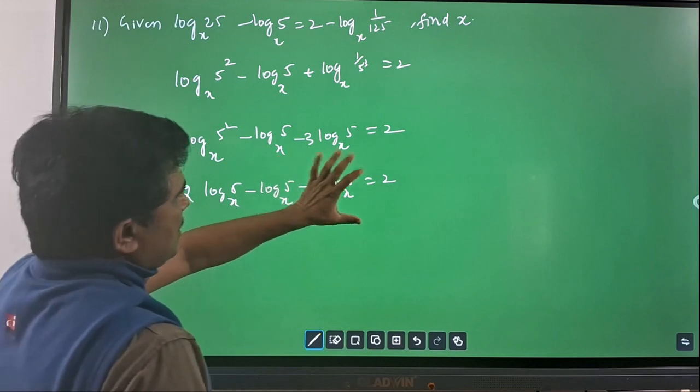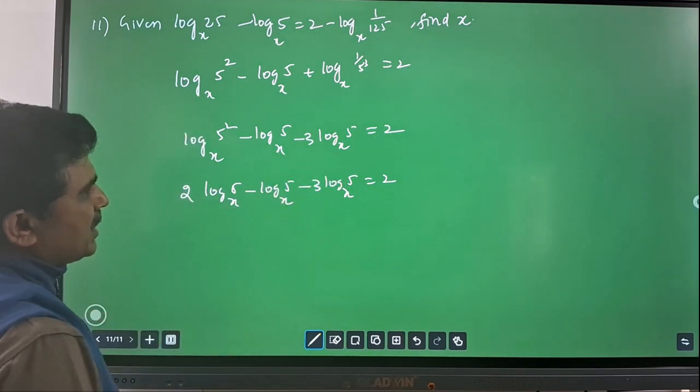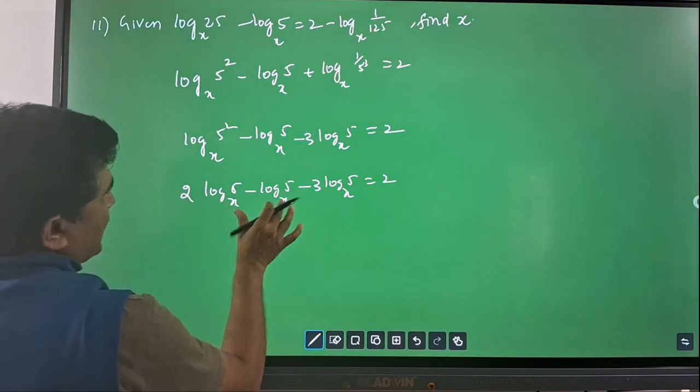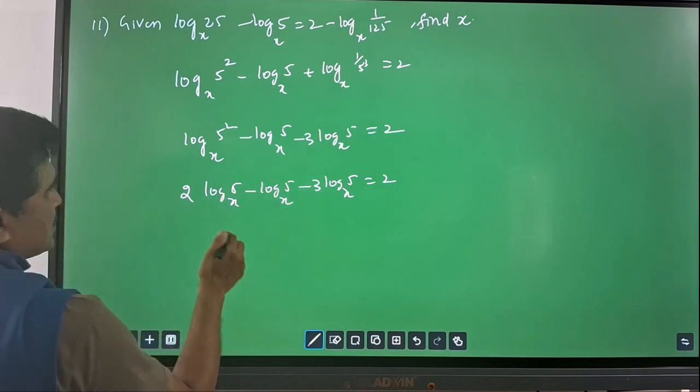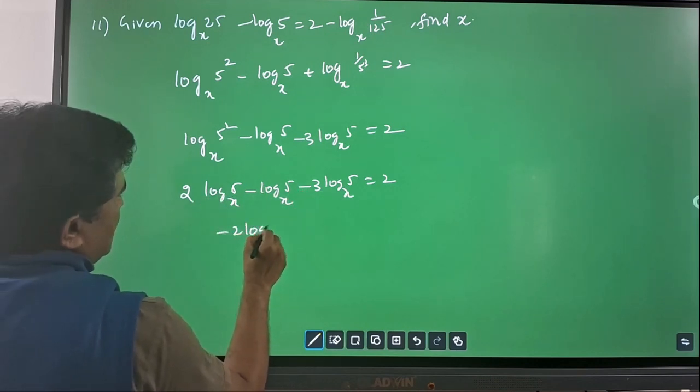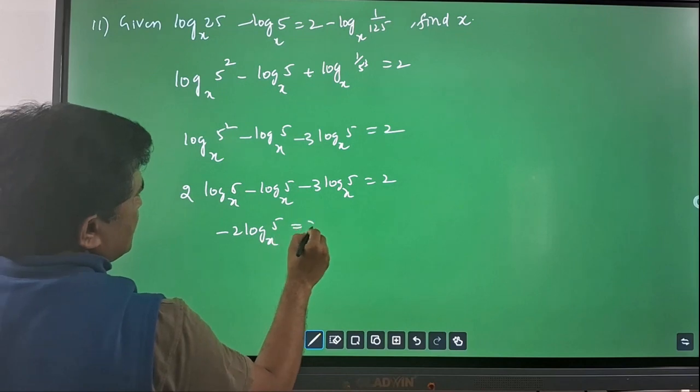Log 5 with base x terms. So, algebraic sum: this is minus 4 log 5 with base x and you have 2 log 5 with base x. You will have minus 2 log 5 with base x, which is equal to 2.